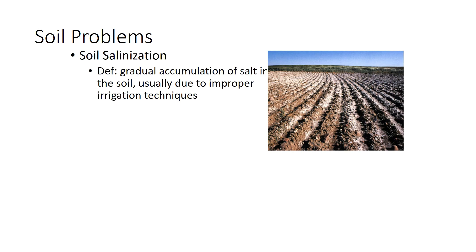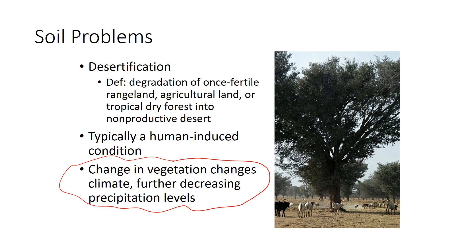Back to the idea of desertification — it's the gradual degradation of once fertile rangelands, typically what used to be grasslands, turning them into essentially a desert in terms of how productive they are and the types of plants and animals they can support. Typically, desertification is a human-induced process. There's also a feedback mechanism here: trees and plants themselves contribute to climate and actually help increase precipitation. So changes in vegetation can also cause changes in precipitation, which can further exacerbate the problem.